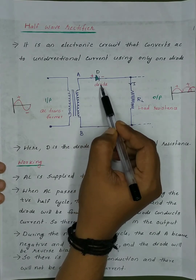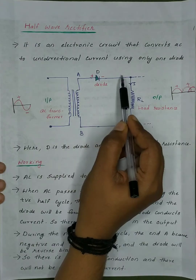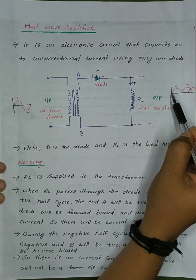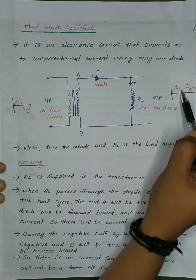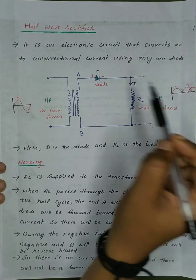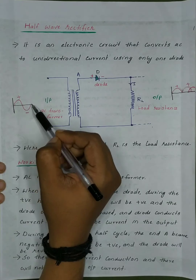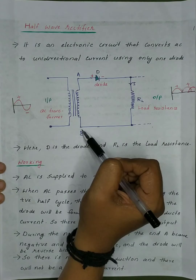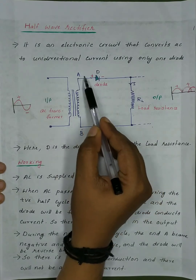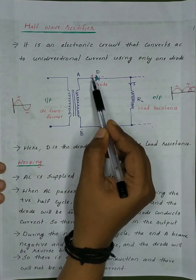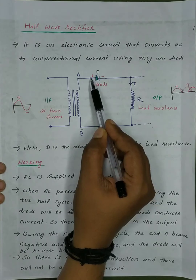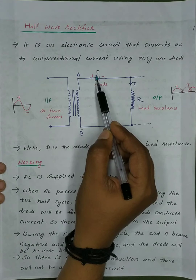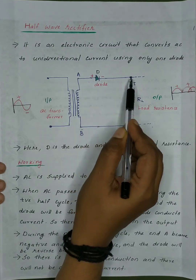We use forward bias and current conduction occurs. So the diode will allow current to flow and we will get a current output. In the case where end A is negative and B is positive, the diode is reverse-biased and the current is zero.